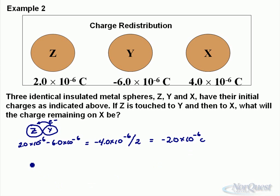So that means when I take Z out of there, it no longer has a charge of plus 2. It now has a charge of minus 2.0 times 10 to the negative 6 Coulombs. And now I'm going to touch it to X in this case. If it contacts X, X has a charge of plus 4.0 times 10 to the negative 6. That gives us a net charge of 2.0 times 10 to the negative 6, positive.